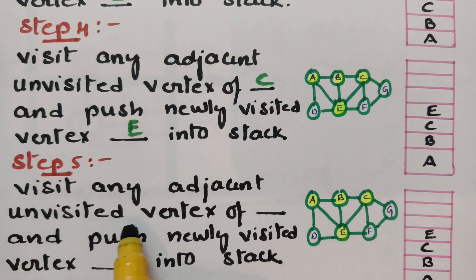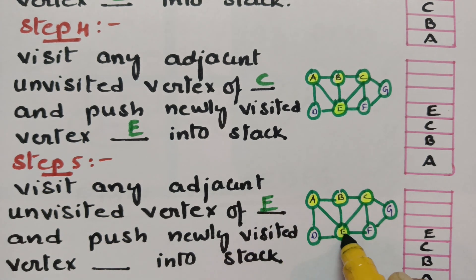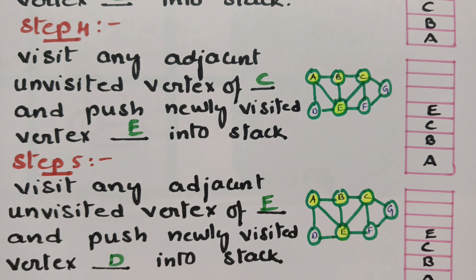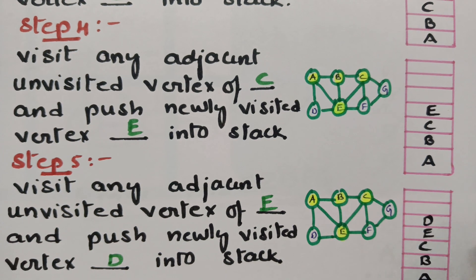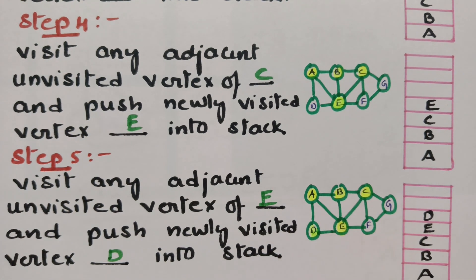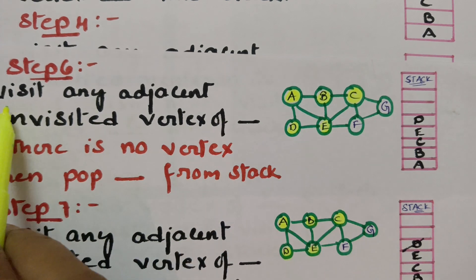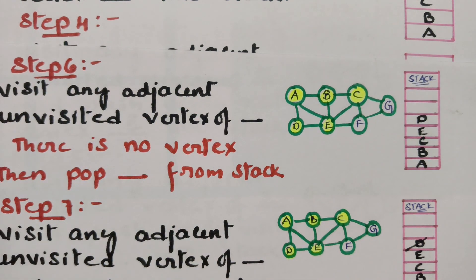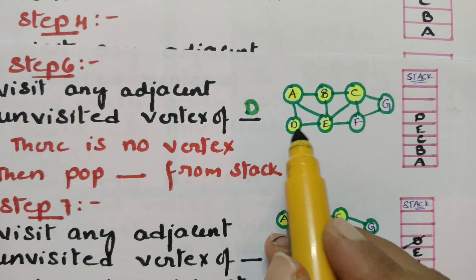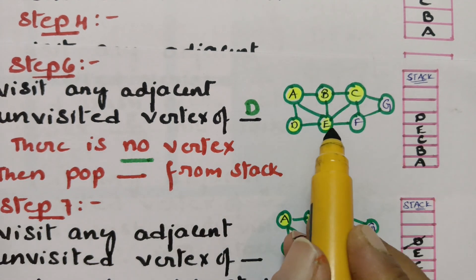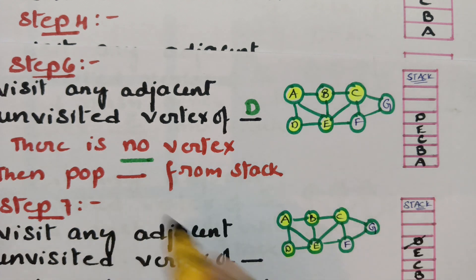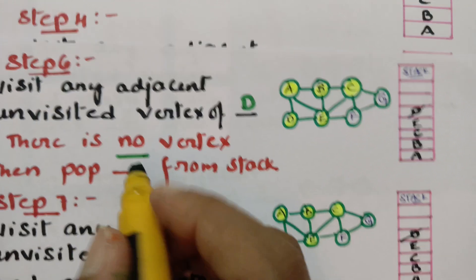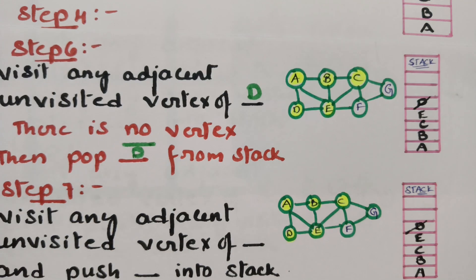Step 5: Visit any adjacent unvisited vertex of E. I am choosing D, so push D into the stack. Step 6: Visit any adjacent unvisited vertices of D. There is no vertex from D to visit, so just pop D from the stack. Backtracking should be done — from D, take a backtrack to E.